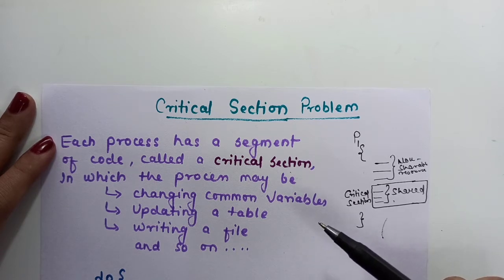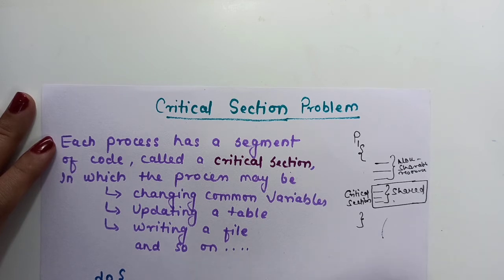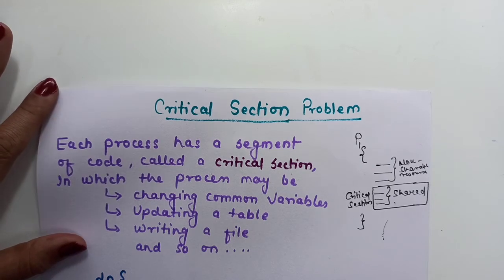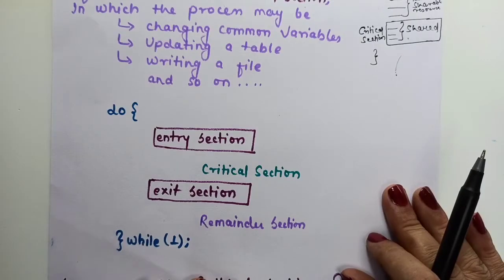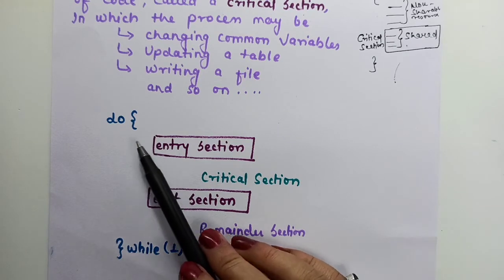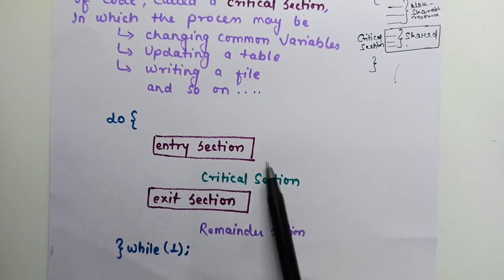The problem is that when two processes access the critical section at the same time, the result becomes inconsistent — that is the race condition, where all the processes are racing to access that resource and leading to an inconsistent state. To solve this critical section problem, before entering the critical section we must follow some rules and check whether any other process is already accessing it, so that only one process can access the critical section at a time.